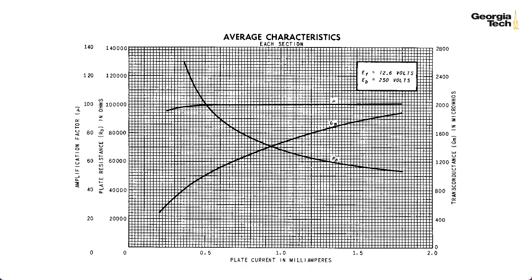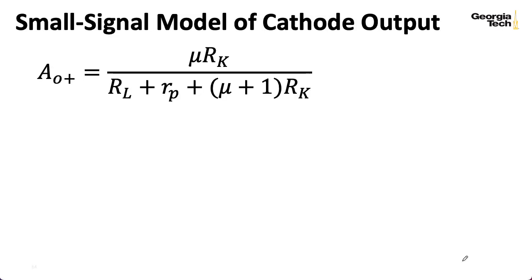So looking up our small signal parameters on the trusty 12AX7 datasheet, if I check out this 1.15 milliamp mark, not surprisingly, mu is 100. But what about the plate resistance? Let's see. So the green line intersects this RP line at 64 kiloohm. So that's what I'll use in our computations. So at this point, I can just start plugging numbers into the formulas we've derived in previous lectures.